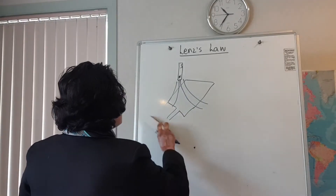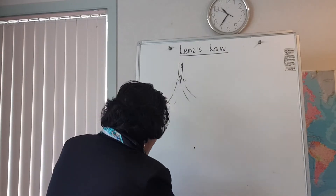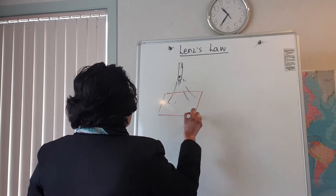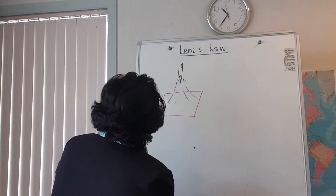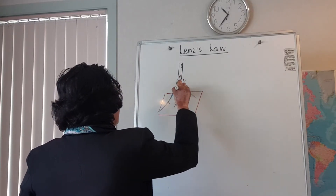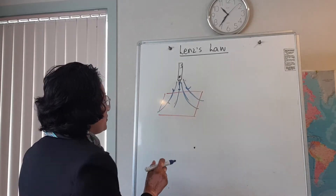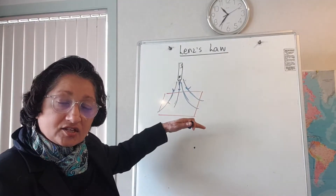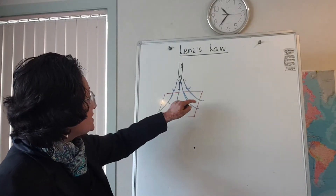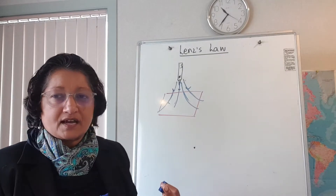In order for the current to flow you actually need a complete loop or a coil of wire. When the magnet moves towards the coil of wire, the lines of flux link the coils of wire and you need what we call a changing flux. If you hold the magnet still nothing happens, but when there's a changing flux there's going to be an induced voltage, and if the circuit is complete there's going to be a current.